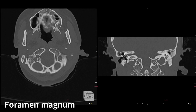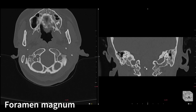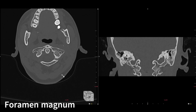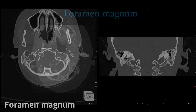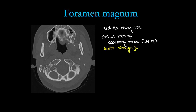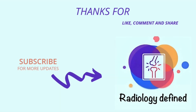On coronal, the foramen magnum is the craniovertebral junction. It contains the medulla oblongata continuing to form the spinal cord. It also has the spinal root of the accessory nerve — CN XI has two roots, and the spinal accessory nerve has a spinal root that comes through the foramen magnum and exits through the jugular foramen after joining the accessory part. The vertebral arteries come up through the foramen magnum, and spinal arteries pass down through it.